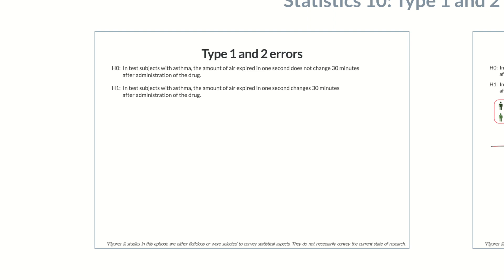So our fictitious study is testing the validity of the null hypothesis. The null hypothesis relates to all individuals with asthma, that is, the entire population of asthmatics. However, the study obviously can't examine everyone with asthma.